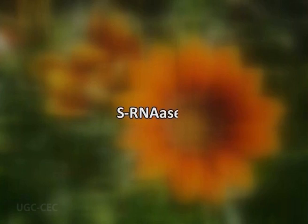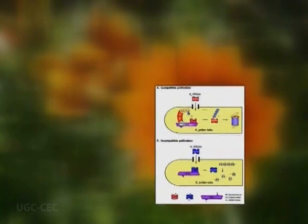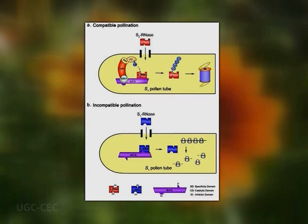Analysis of stylar proteins involved in the inhibition of incompatible pollen tubes revealed the occurrence of S-linked glycoproteins which have RNase activity, commonly referred to as S-RNases. The S-RNases enter into the pollen tube and their interaction with the pollen S-protein determines whether to degrade the pollen RNA or not. In incompatible pollen tubes, the RNA is degraded, which brings about cessation of pollen tube growth in the style. In compatible pollen, the S-RNases are rendered inactive by the activity of the pollen S-protein, thus allowing normal pollen tube growth through the style to bring about fertilization.